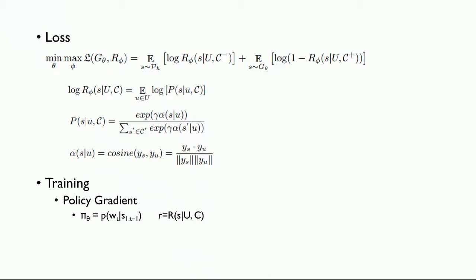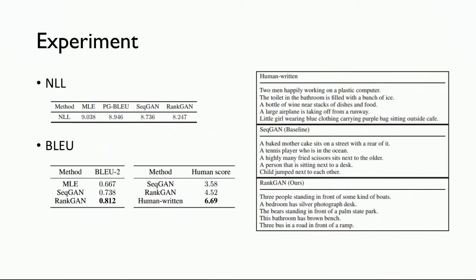To train this neural network, they use policy gradient. The policy is defined as the probability of the next token given the previously generated tokens, and the reward is defined as the big R. Their results are good across different metrics, and examples show the ranker can generate much better results.